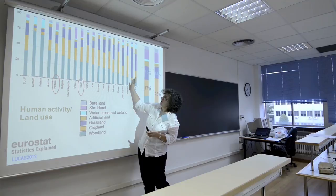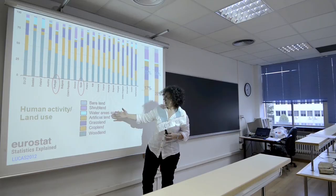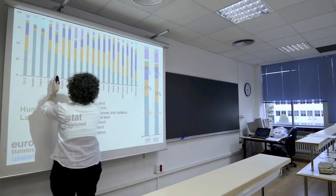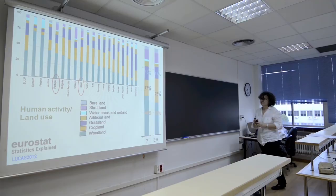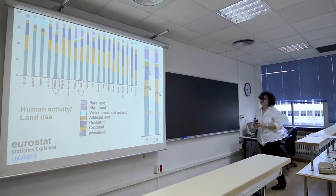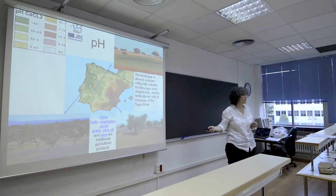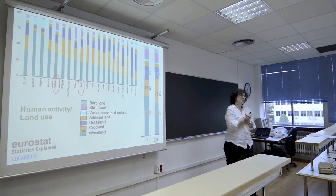We have data from Eurostat on how land is used in different countries — for woodlands, croplands, grasslands, artificial lands, water, etc. If we look at Portugal and Spain, we can notice that they are very similar countries. The main difference is that Portugal has more woodlands and Spain has more croplands. There is also more artificial land — buildings, roads, urbanization — which can be used for other things.